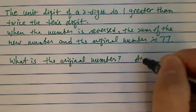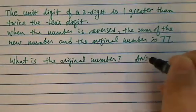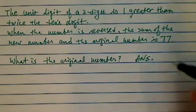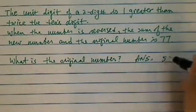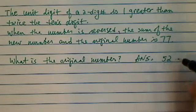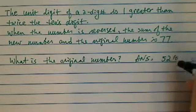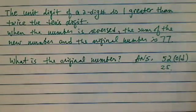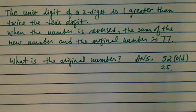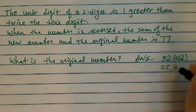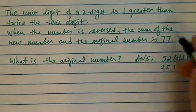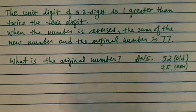The original number is 52 and the new number is 25. When you add them together, of course, you have 77.